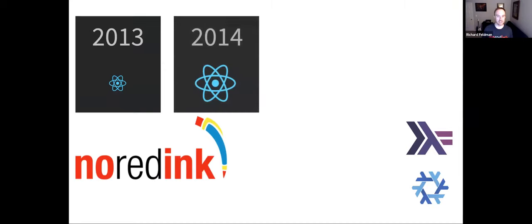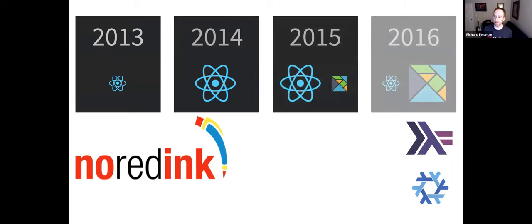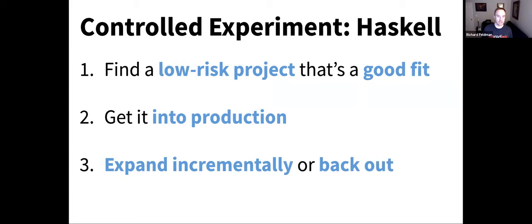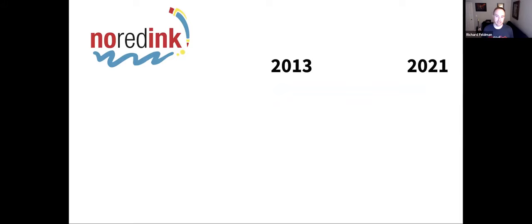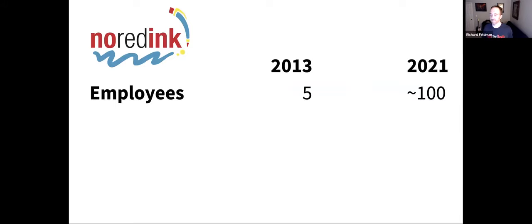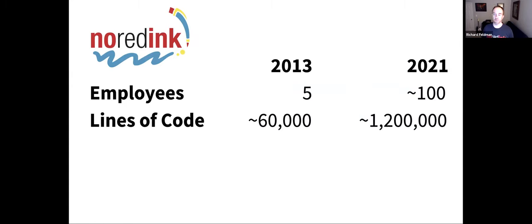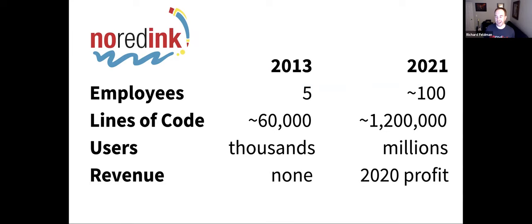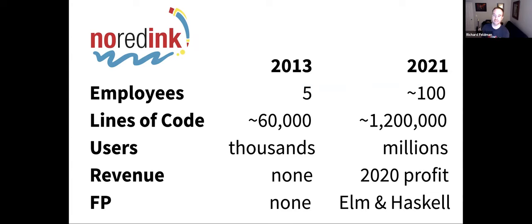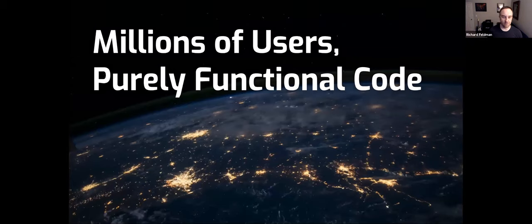To sum up: back in 2013, very small company, no money, no revenue, no functional programming. Between then and now, we introduced React, then transitioned to Elm, which took over our front end, and then Haskell and Nix came out of that. We did controlled experiments one after another — the formula is: find a low-risk project that's a good fit, get it all the way into production, expand incrementally, or back out. That's how we got from 5 employees to over 100, 60K lines of code to 1.2 million, thousands of users to millions, and no revenue to actually turning a profit — thanks to functional programming.